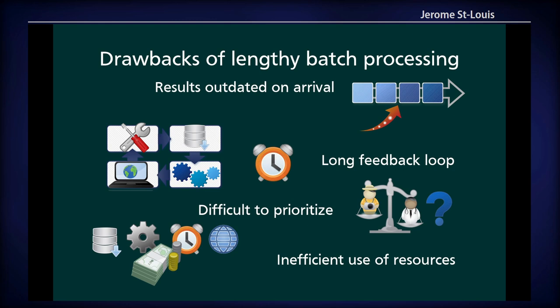Another problem is the long feedback loop. Your data has to be downloaded to the processing server or local processing, then you have to run the processing, then visualize the output — often for a specific area and resolution of interest. If something is wrong and you want to tweak the settings, for example if you have some algorithm with parameters, you have to run through the whole thing again. It's also difficult to prioritize more important use cases, like disaster emergency response, and all of this makes for inefficient use of resources in terms of bandwidth, time, and processing power, wasting money as well.